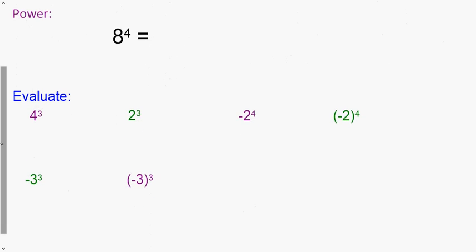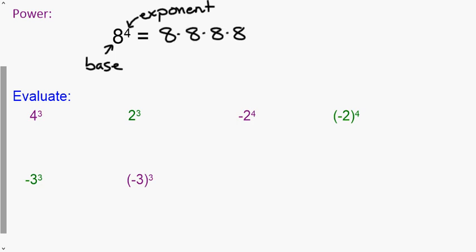First, we're talking about what is a power. When we talk about a power, we have two parts: the first part is the base, and the second part is the exponent. The exponent tells you how many times the base is multiplied together. So in this case, since it's 8 to the fourth, that means it is 8 times 8 times 8 times 8.